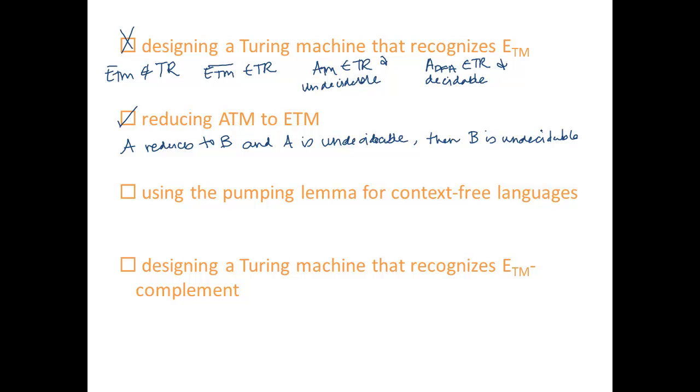So if A is undecidable and it reduces to B, then if we have a solution for B, we have a solution for A. So if B is decidable, then A must be decidable. So if we know that A reduces to B and A is undecidable, then it can't be the case that B is decidable. B must be undecidable. So we have that A_TM is undecidable. So if A_TM reduces to E_TM,